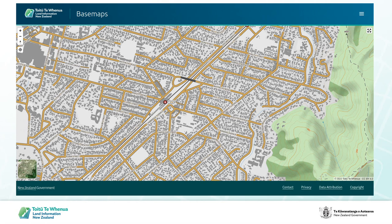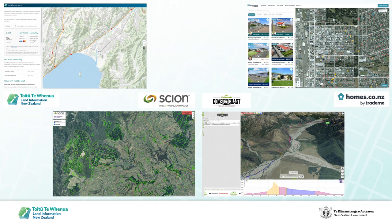We also produce a VectorTiles service from the latest Topo 50 data. In terms of our customers, these services are used for our own web mapping purposes — for example, in a land record search shown in the top left. Scion Research uses basemaps imagery with deep learning to extract exotic forest boundaries as part of their digital forest project. A coast-to-coast multi-sport event used basemaps as a backdrop for 3D flyers and athlete tracking. OpenStreetMap also has the basemaps service so that mapping can be done off the aerial imagery.